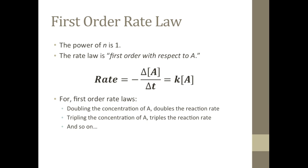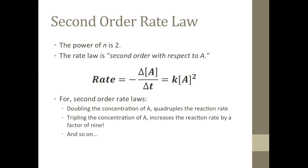Here is a generic version of the first order rate law for a reaction in which some generic reactant A reacts to form products. Let's also look at the generic version for the second order rate law. This form is what you get if the order of reactant A is 2. You would recognize a second order reaction because the rate depends on the molar concentration of A squared — so doubling the concentration would quadruple the rate, or tripling the concentration would give you 9 times the previous rate.